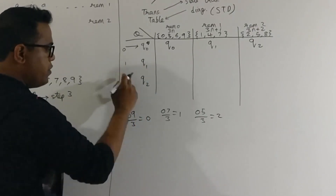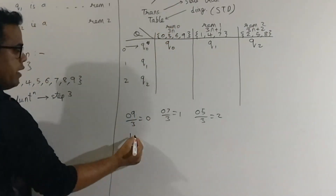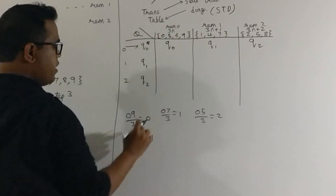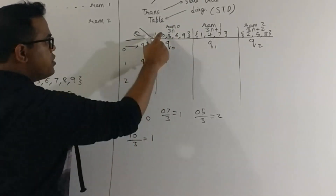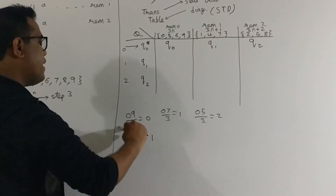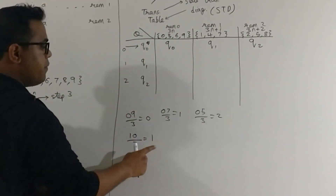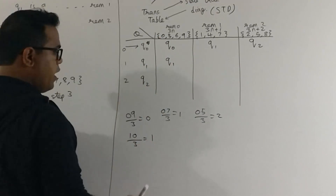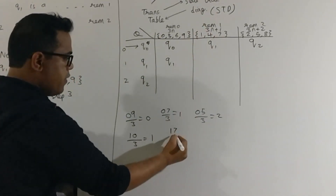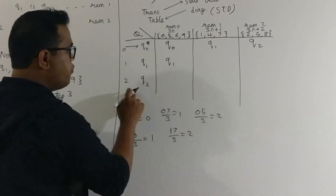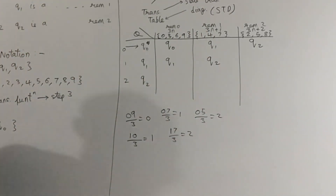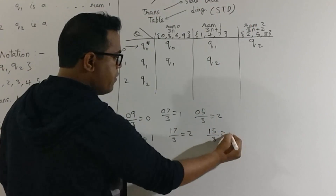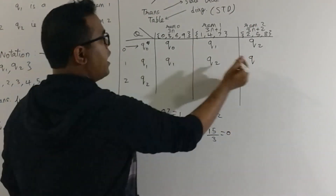Now for row Q1, you have 1 with you. Pick a remainder-0 number — say 0. Concatenated it becomes 10. Divide by 3: remainder is 1, so go to Q1. From Q1, pick a remainder-1 number — say 7. 17 divided by 3: remainder is 2, so go to Q2. From Q1, pick a remainder-2 number — say 5. 15 divided by 3: remainder is 0, so go to Q0.